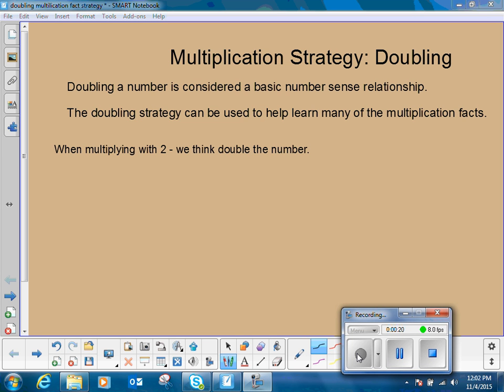Beginning with multiplying with two, we think double the number. So for the fact two times seven, we think double seven. We know that is equal to 14. So two times seven is 14.